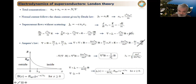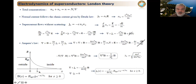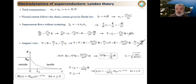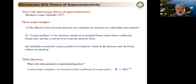From the London equations, solving the flat boundary problem between normal and superconducting metals, we found that the magnetic field remains constant outside the superconductor but decays exponentially inside. The characteristic length scale describing this exponential penetration is called the penetration depth λ. As temperature approaches T_c, the penetration depth becomes larger and larger, which was also experimentally observed.